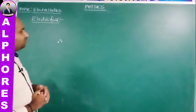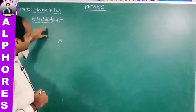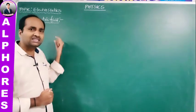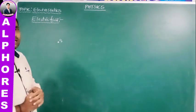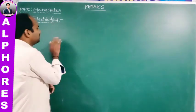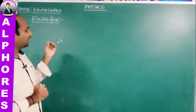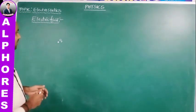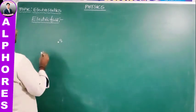The space around the charged particle up to which its influence is felt is called the electric field. If the charged particle lies within the electric field, only then will the attraction or repulsion force be experienced. Now, what are electric lines of force?